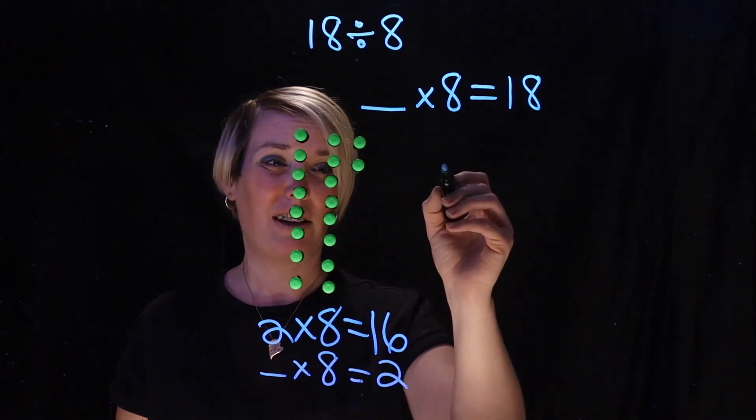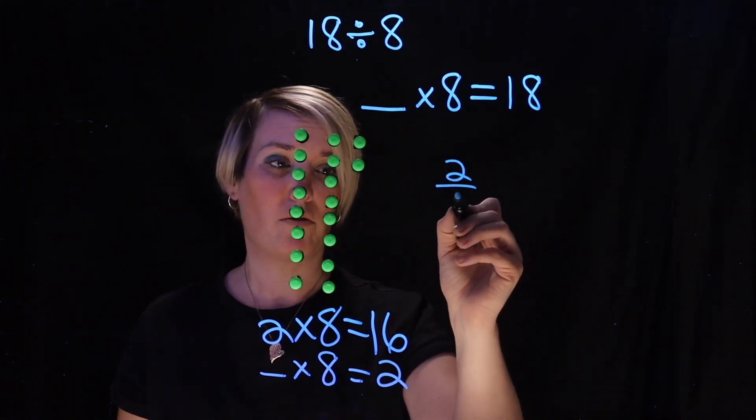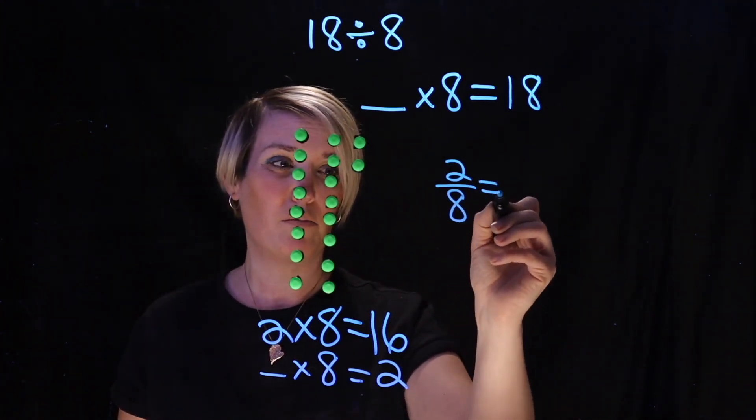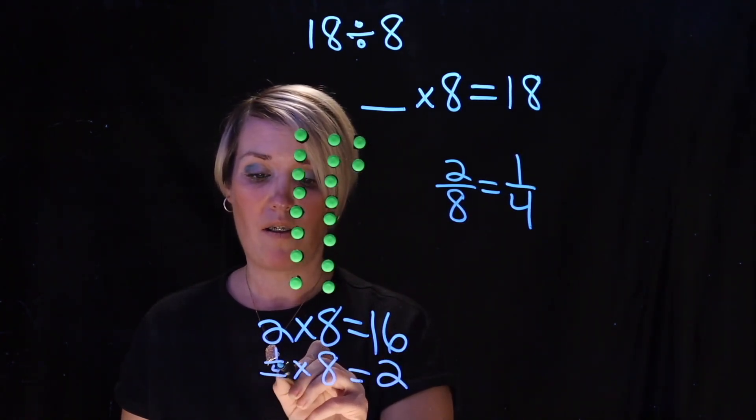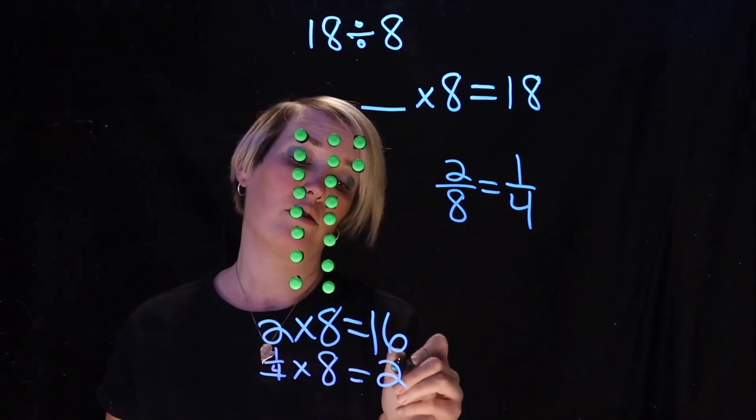And what he told me was this was like he thinks of this as 2 over 8 which he told me is like a quarter. So he said if I go a quarter times 8 I get 2 back.